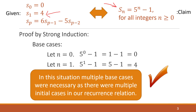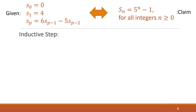In this situation, multiple base cases were necessary because we were given multiple base cases in our recurrence relation. This is an example where it's very obvious that we need multiple base cases in our proof. Because we're given multiple base cases in the recurrence relation, we need multiple base cases in our proof — and often it will be very obvious when you need more than one.